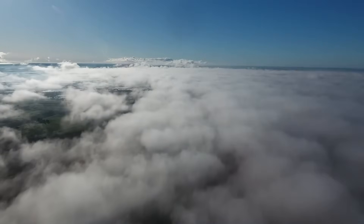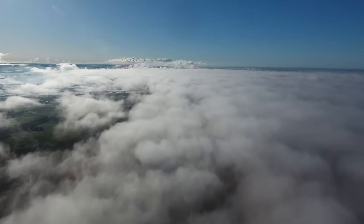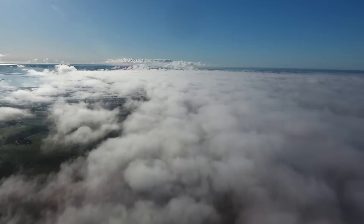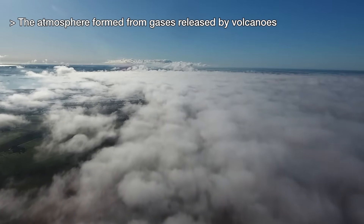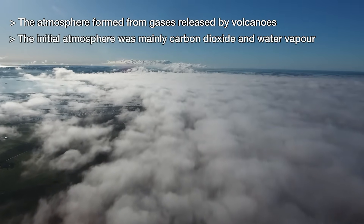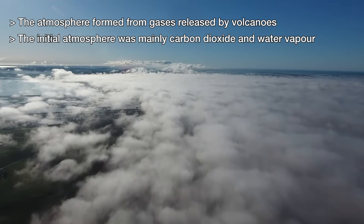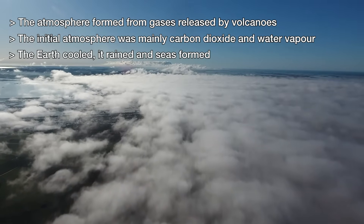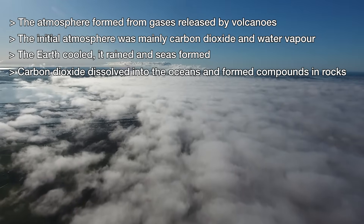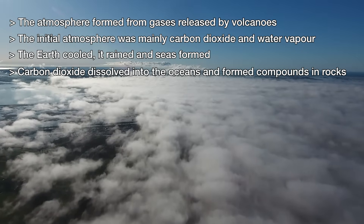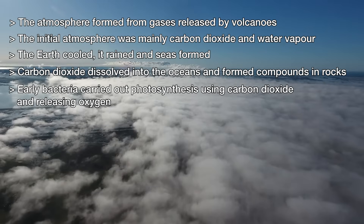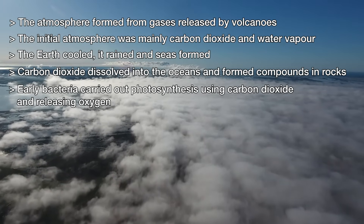And that, in short, is as much of the history of the Earth's atmosphere as you need to know. To recap the key points: the Earth's atmosphere formed from gas molecules released by volcanoes; the atmosphere was largely carbon dioxide and water vapour, with small amounts of ammonia, nitrogen and methane; the Earth cooled and water vapour condensed to form oceans; carbon dioxide dissolved into the oceans and became trapped as carbonate compounds in rocks; photosynthetic life began about 3 billion years ago and used up much of the remaining carbon dioxide, releasing oxygen; and Earth's atmosphere was then effectively stable from 2 billion years ago until the present day.